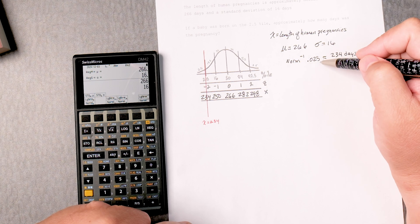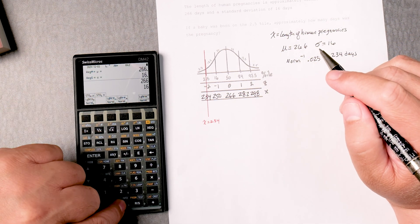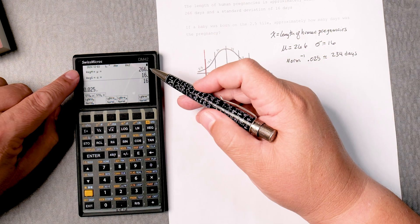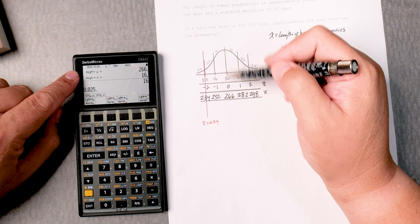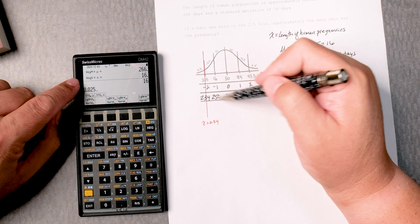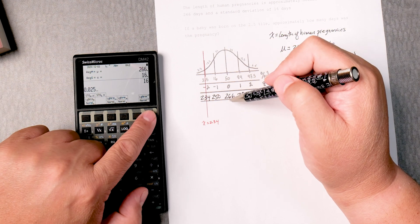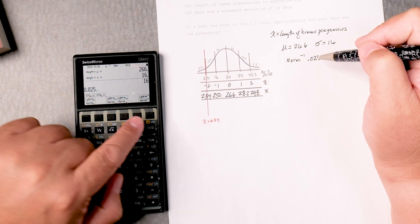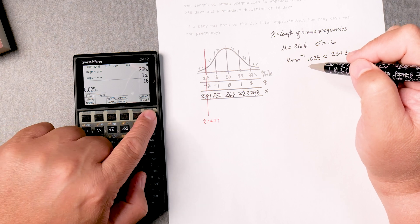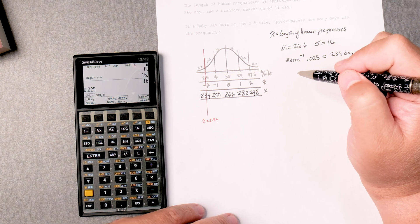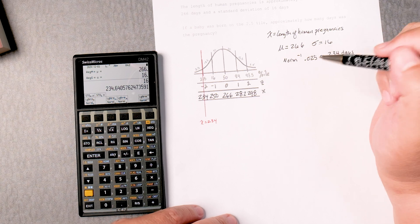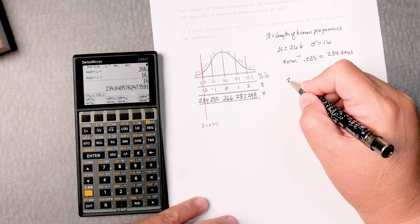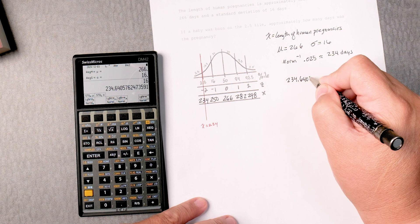Now let's do the inverse normal. We put 0.025. Now that the calculator knows 266 is the mean and the spread is 16, we can do the inverse normal. Placing 0.025, we click over here for the inverse normal. And there it is. Our calculation got 234.6405.